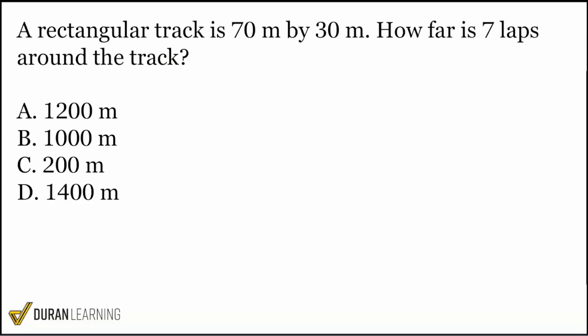So everyone, we see here that it says we're dealing with a rectangle. And when we draw a rectangle, this rectangular track, everybody, one lap around this track. So let's say we're starting from right over here. Let's do one lap around this track. What are we going to call that? We go through the length, the width, the length again, and then the width.